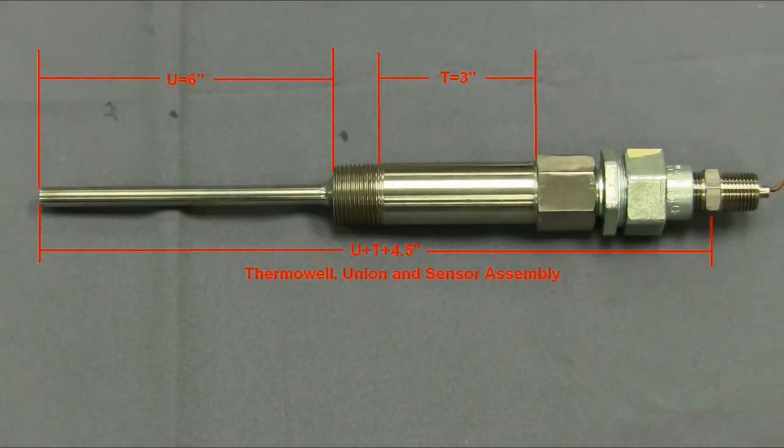Therefore, if you have a U of 6 inches and a T of 3 inches, the sensor to select would be U plus T equals 9 inches.